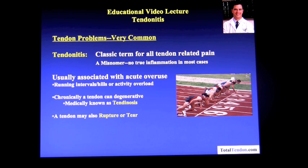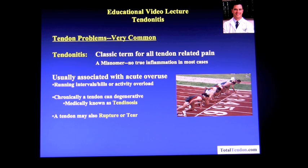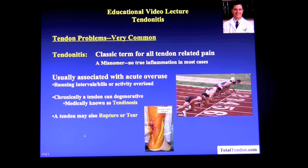Tendinitis is a very common problem. It's a classic term used for all tendon-related pain. It is, however, a misnomer, as there is no true inflammation in most cases. Specifically, tendinitis may be associated with acute overuse, such as running in the hills or activity overload. Chronically, a tendon can degenerate, and this is known medically as tendinosis. A tendon may also rupture or tear, as is seen in this Achilles tendon tear.